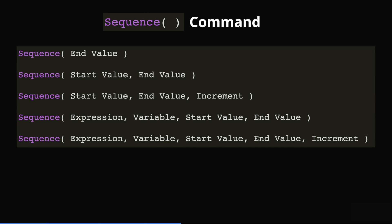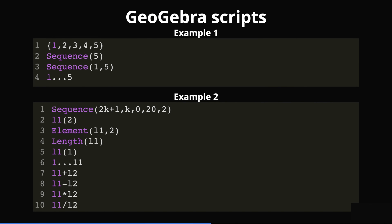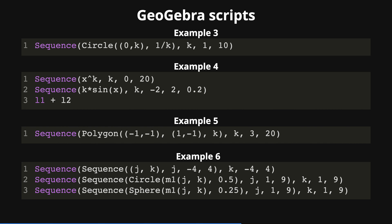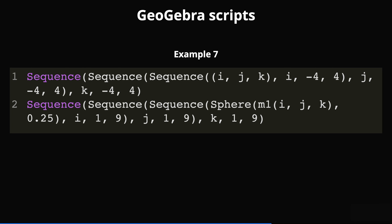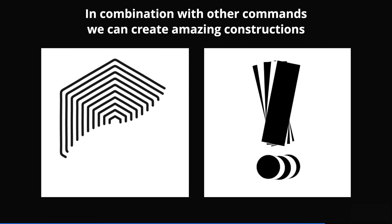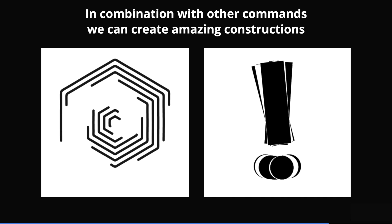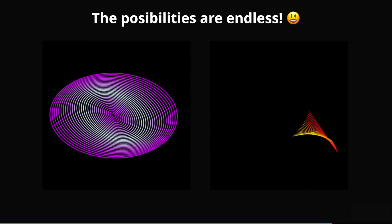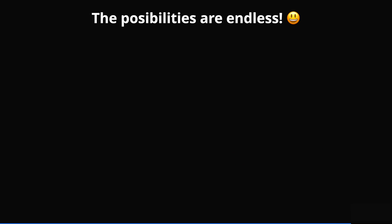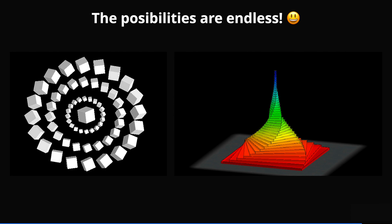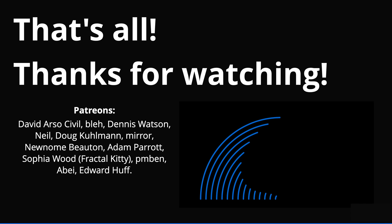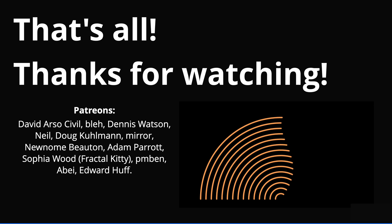All right, so we covered a few examples using the sequence command with different input values, from basic to a little bit more complicated. I will leave a link in the description with the GeoGebra script so you can play around with these examples and make changes. Also, maybe use other GeoGebra commands in combination — we can create amazing constructions like these ones. The possibilities are endless if we also introduce color. Thank you for watching. If you would like to see more videos like this, let me know in the comments. Bye bye.